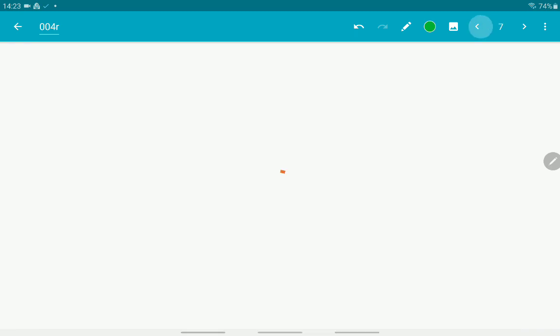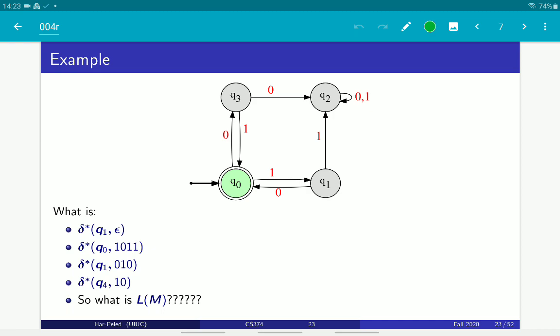The next question, of course, is what is this language? And we already discussed this. That this is just 1, 0, 0, 1 star. Because 1, 0, 0, 1 from the start state returns it to a start state. And you can do it alternatively as long as you want and finish up in the end state. And that's the only way to get there.